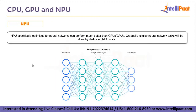The combination of CPU and GPU along with sufficient RAM offers a great testbed for deep learning and AI. But this hit a roadblock and couldn't reach the expectations of deep learning. That is the reason why NPUs or AI accelerators were born. Traditional CPUs or GPUs can do similar tasks, but NPUs specifically optimized for neural networks can perform much better than CPUs and GPUs combined. Gradually, similar neural network tasks will be done by dedicated NPU units.